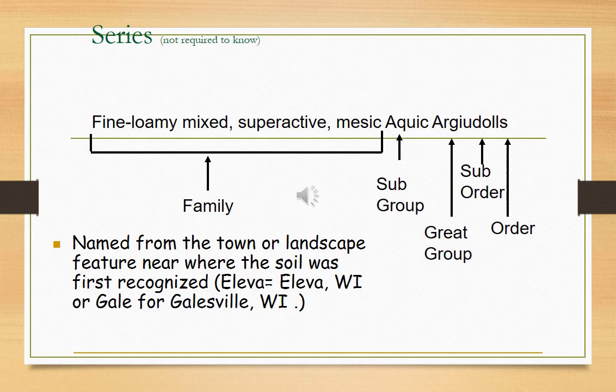The name of a soil series has no pedogenic significance. It represents a prominent geographic name of a river, town, or an area where the series was first recognized. Soils in the same series have similar properties such as color, texture, structure, consistence, thickness, pH, number and arrangement of horizons, and their chemical and mineralogical properties.